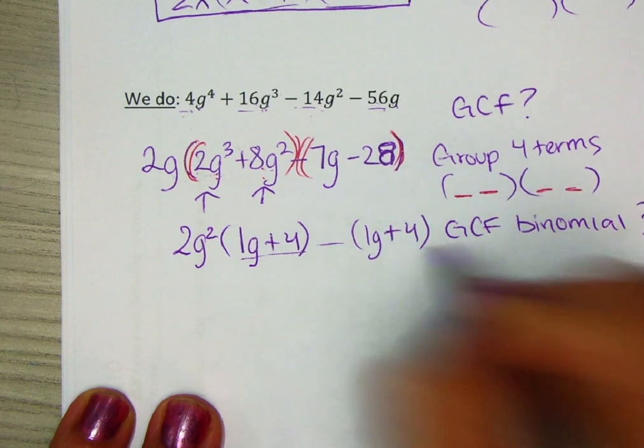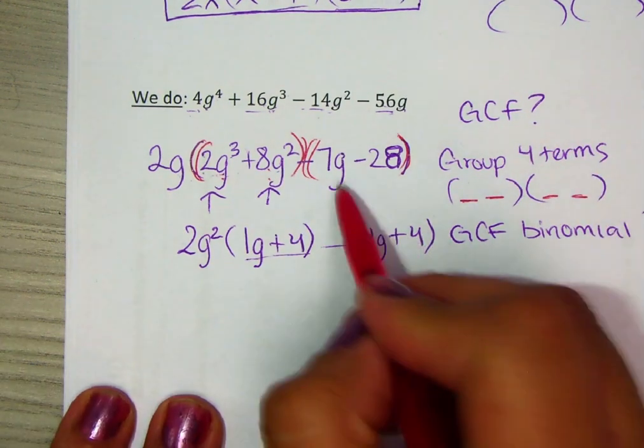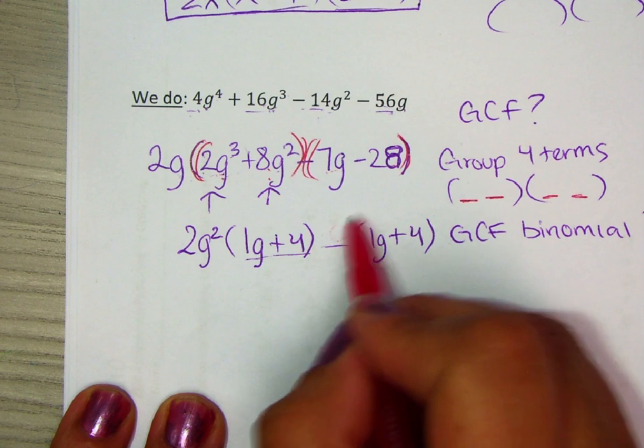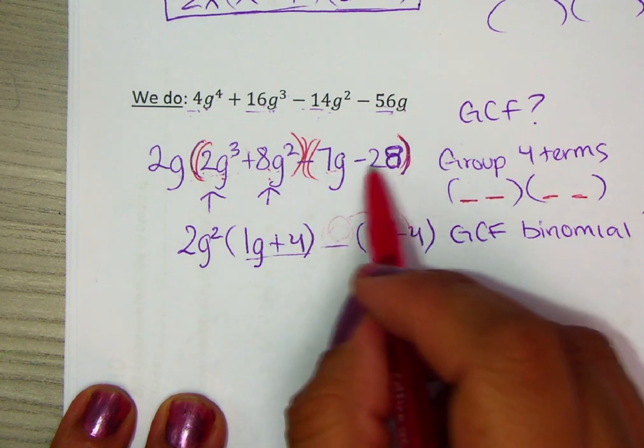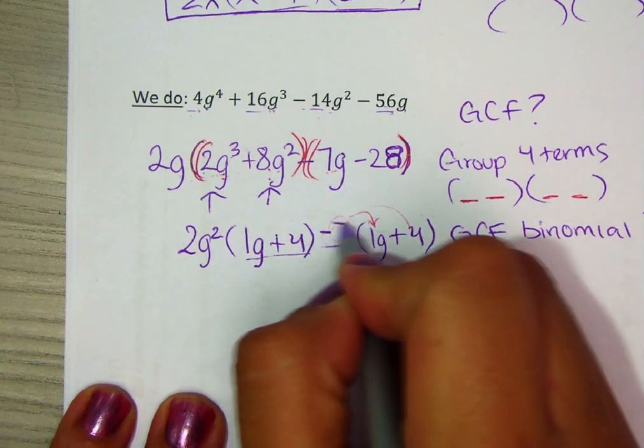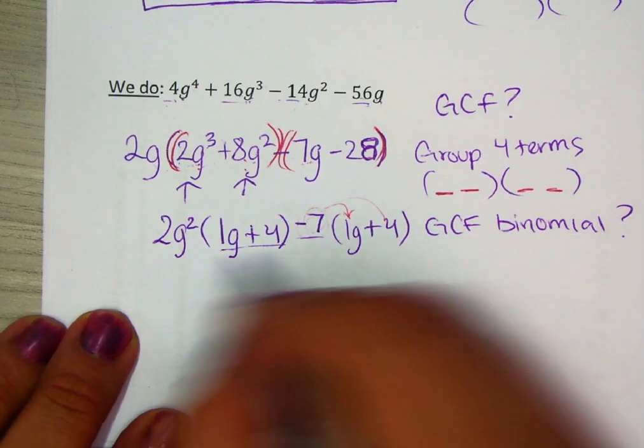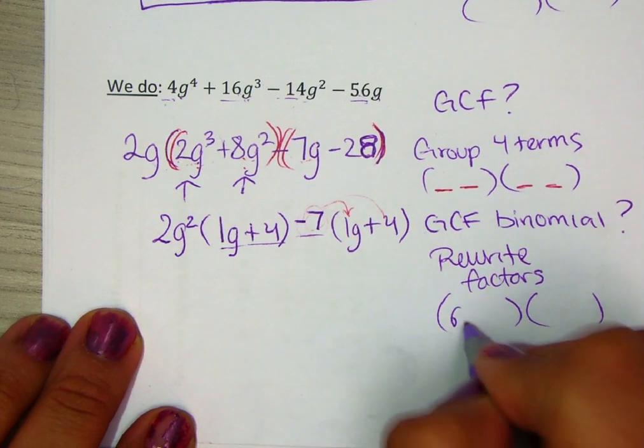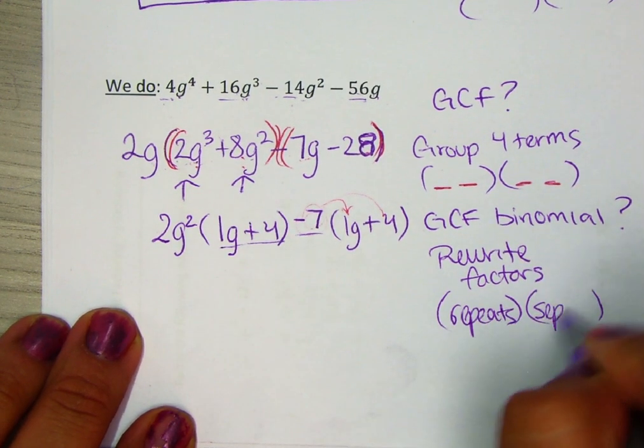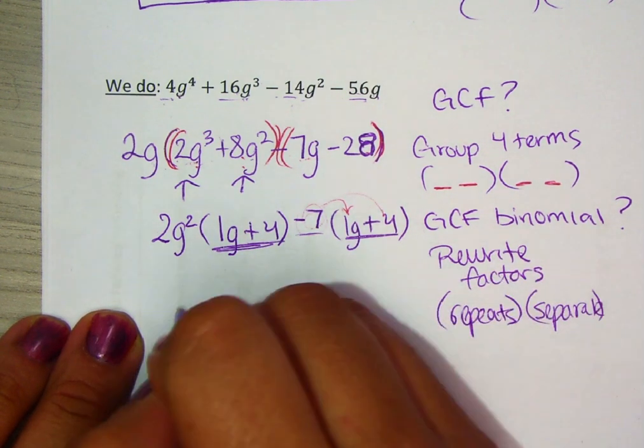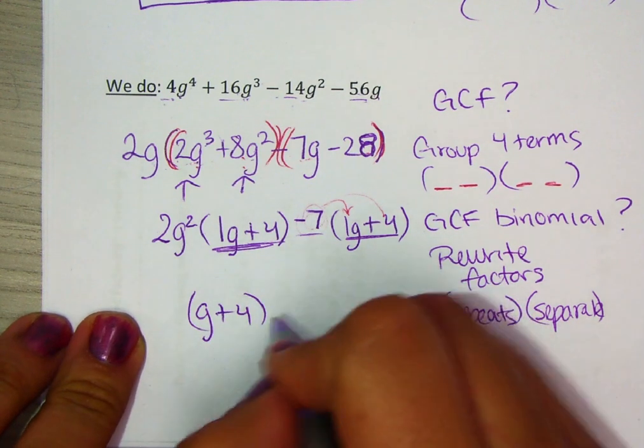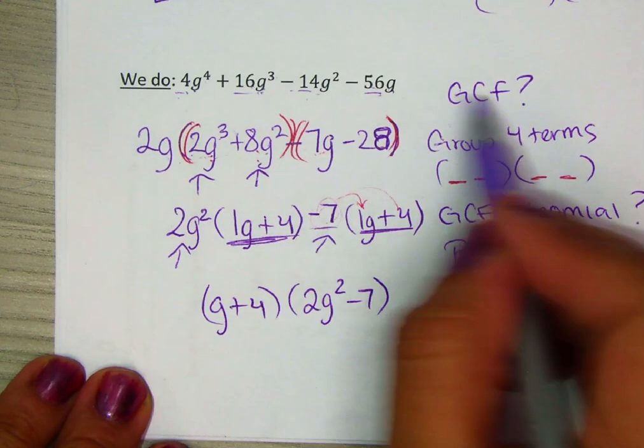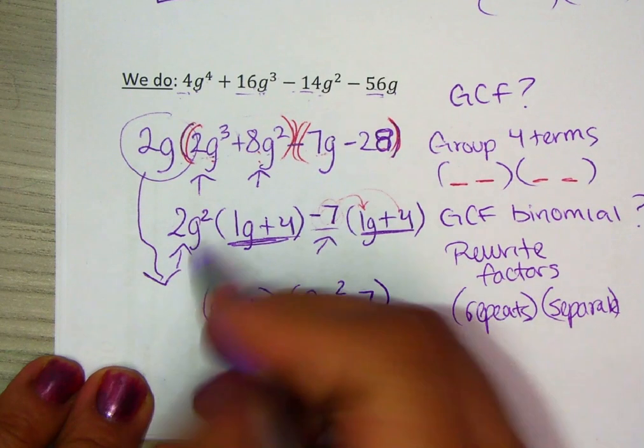Ask yourself, what can these two have in common? If it's negative 7 and negative 28, think what number times 1 gives you negative 7, and what number times 4 gives you negative 28? Definitely negative 7 applies there. Once we fill in that space, we rewrite your factors. One of them is the one that repeats, the other is the separate. The one that repeats is one of your factors, g plus 4. The other is 2g² minus 7. Double check if in the beginning you factored out the GCF, then bring it back and put it in the front.